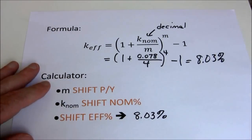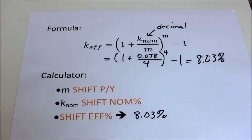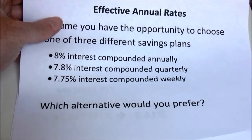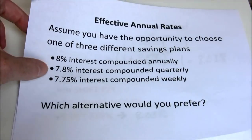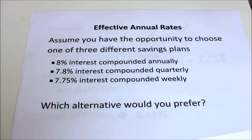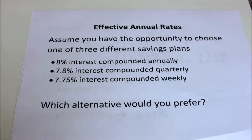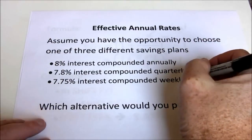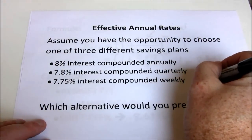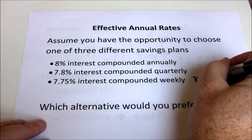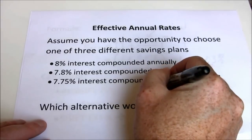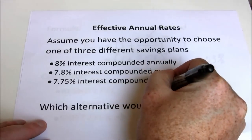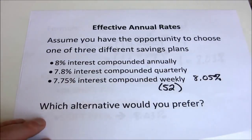So 7.8% compounded quarterly is equivalent to 8.03%, which is a little bit better than our 8% compounded annually. But is it better than 7.75% compounded weekly? As an exercise, go ahead and walk through that on your own. You should come up with an answer of 8.05%. Remember, compounded weekly means 52 periods per year.